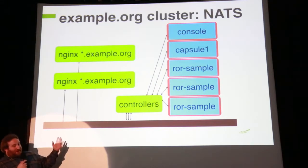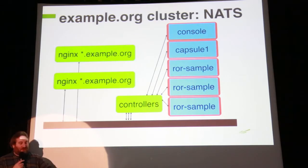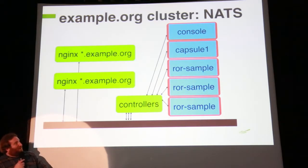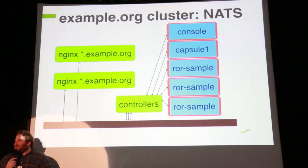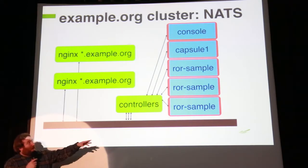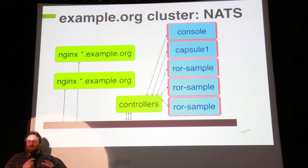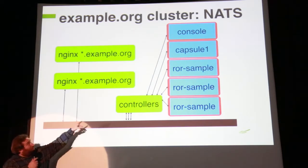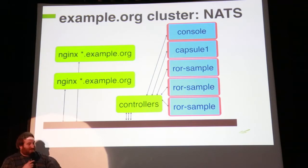So instead of HTTP traffic, here's the control traffic. You basically have a Nats bus — just think of it as a common communications bus. There are things which control the running customer application instances, and they talk via Nats. The controllers do not talk to the Nginx instances; they just talk to Nats.